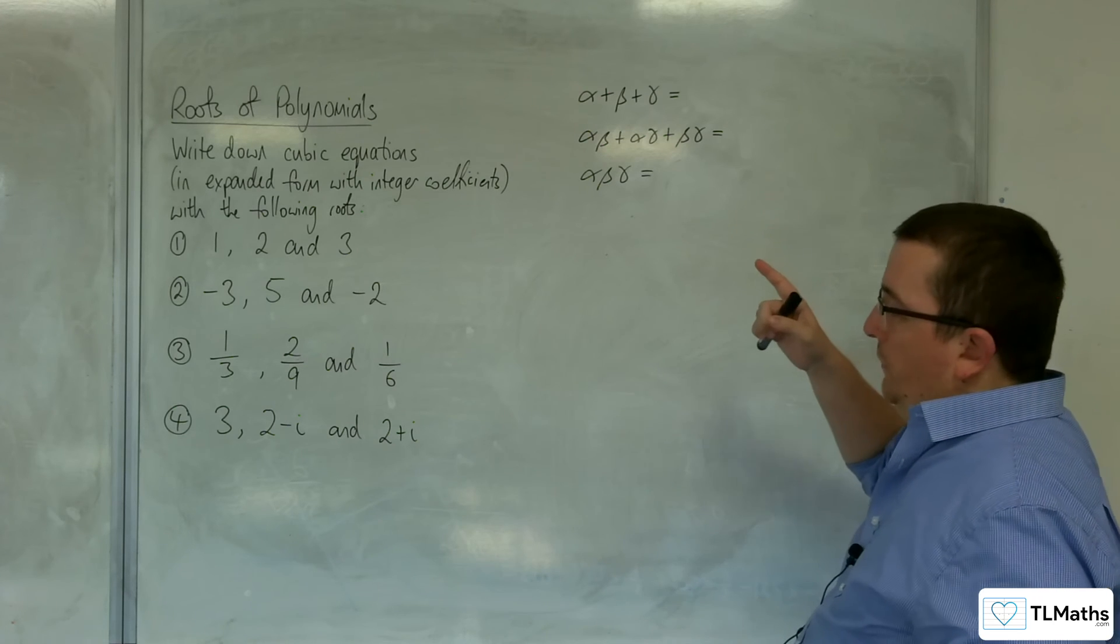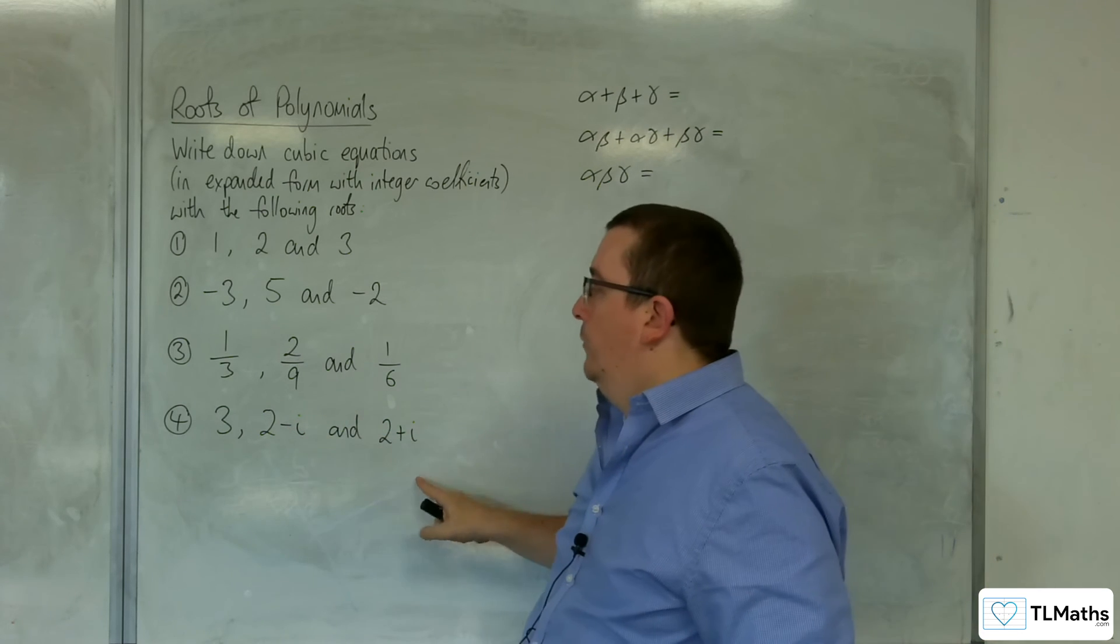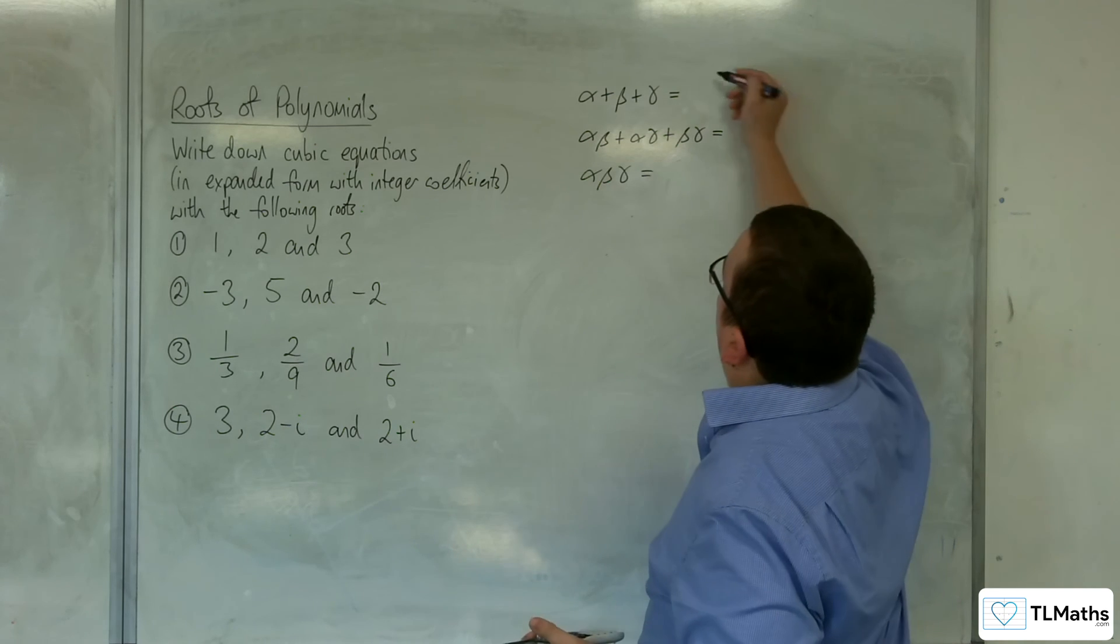So, first of all, we've got the sum of the three roots. So, 3 plus 2 take away i, plus 2 plus i. Now, the i's will cancel. So, 3, 5, 7. So, that's going to be 7.